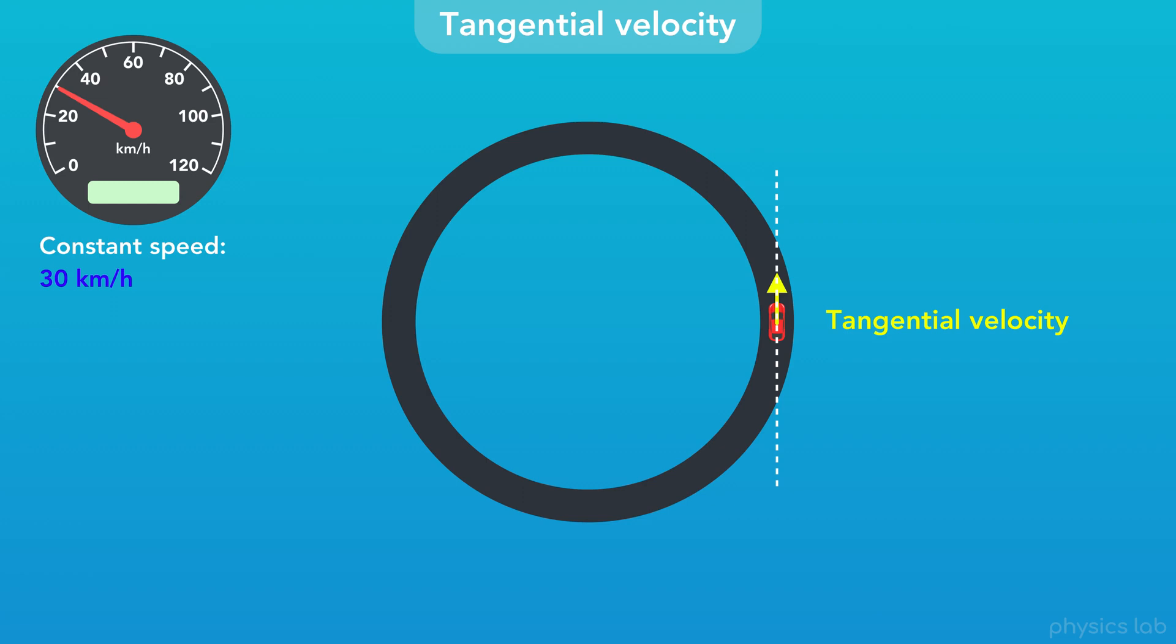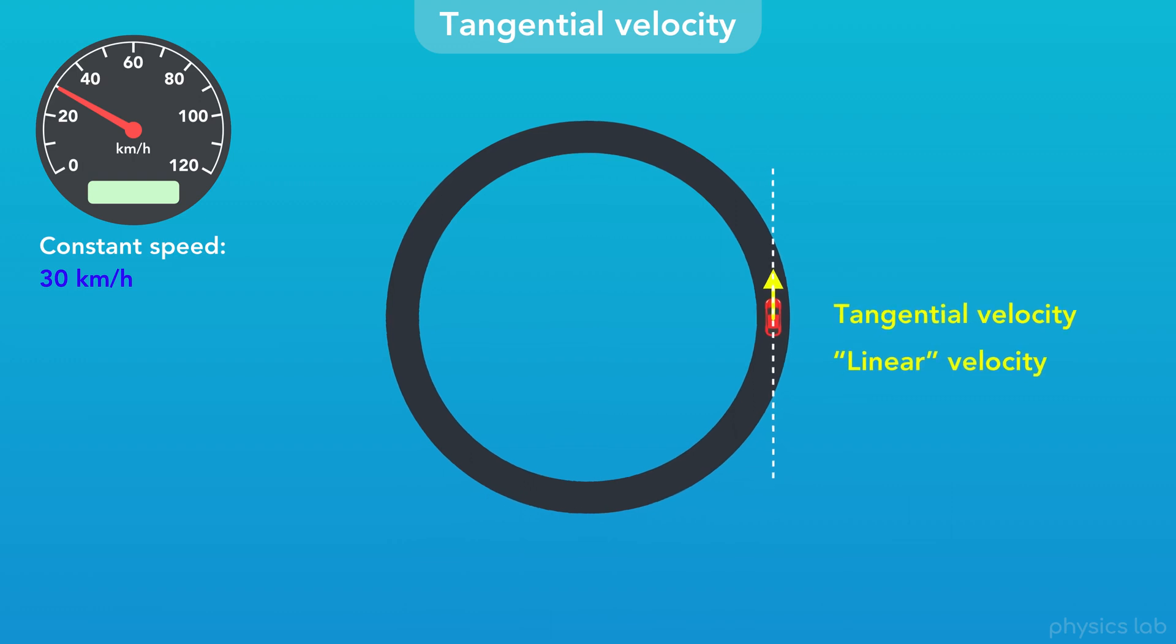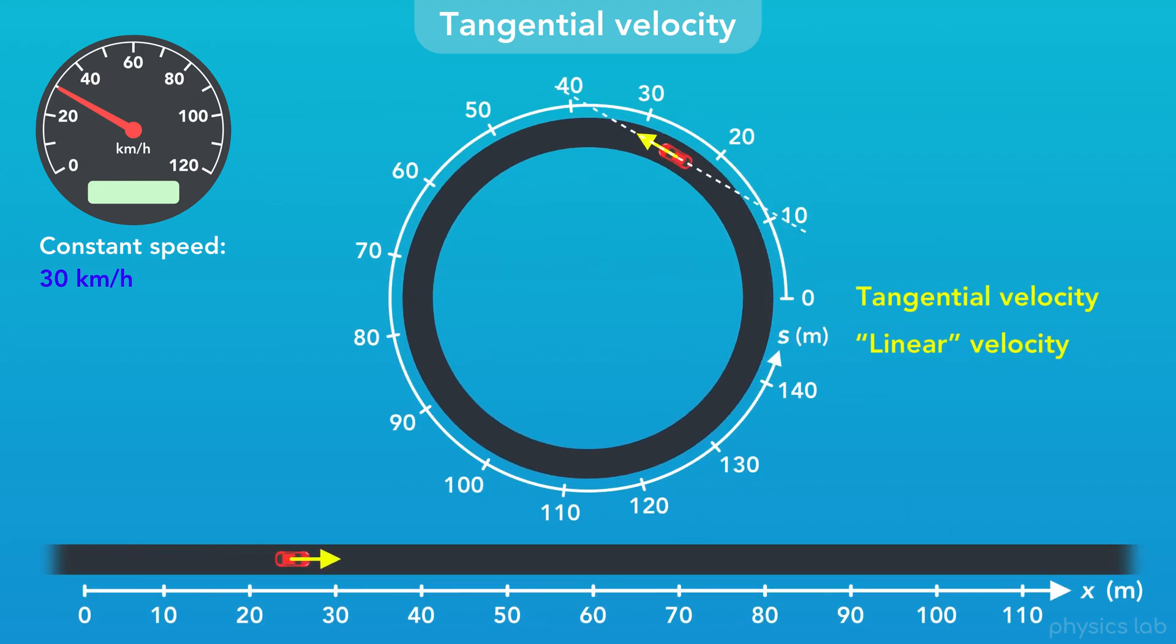You might also hear this referred to as the linear velocity of an object in circular motion, because we're describing the object's velocity along this tangent line at a given instant. From the car's point of view, its motion is being described as if the circular path was straightened out into a line.